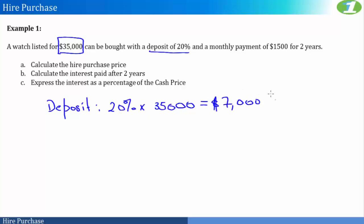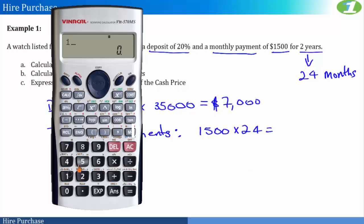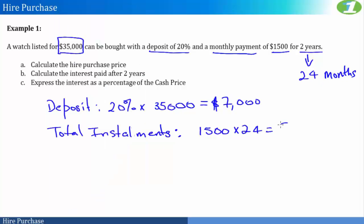And given that we know our deposit amount, then our total installments must be two years worth of $1,500 payment. Now two years, given that these are monthly payments, then two years equates to 24 months. And if I'm paying $1,500 for 24 months, then in total I would have paid $1,500 times 24, and so I would have paid $36,000.